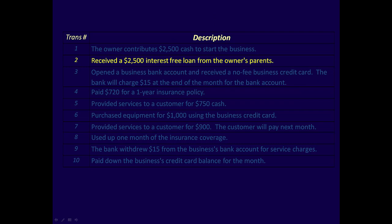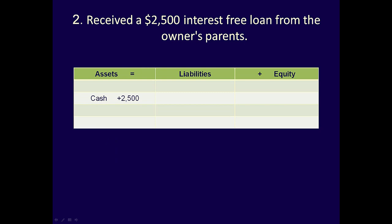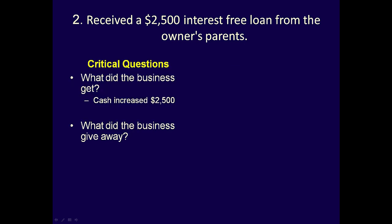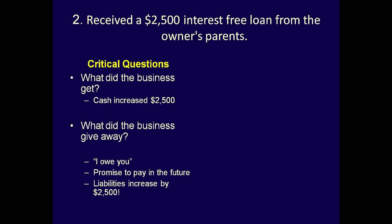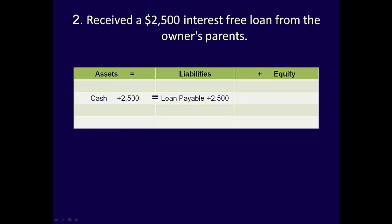Transaction 2: Received a $2,500 interest-free loan from the owner's parents. What did the business get? Cash of $2,500, which we know is an asset, so we won't go over that again. The account cash increases by $2,500. What did the business give away? The business gave away an IOU — a promise to pay $2,500 in the future — so liabilities increase by $2,500. The account name to use to represent this is loans payable. Loan payable increases by $2,500. Again, the equal sign tells us we have recorded the entry correctly.